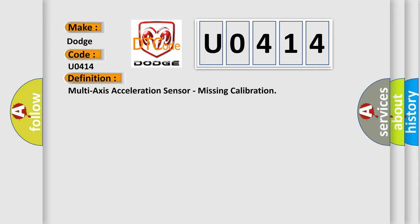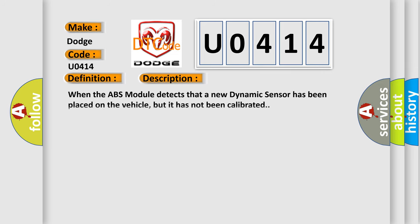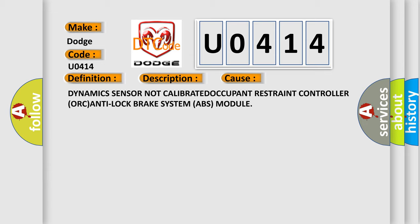And now here is a short description of this DTC code. When the ABS module detects that a new dynamic sensor has been placed on the vehicle but it has not been calibrated, this diagnostic error occurs. This most often happens when the dynamic sensor has not been calibrated by the occupant restraint controller or the anti-lock brake system (ABS) module.